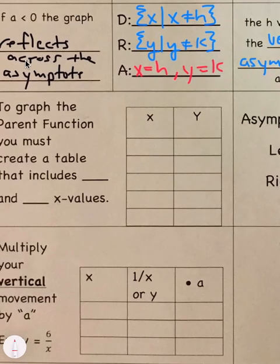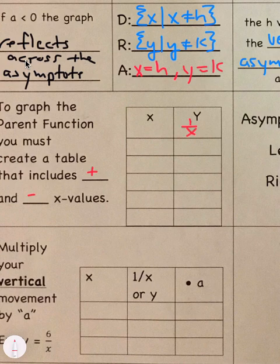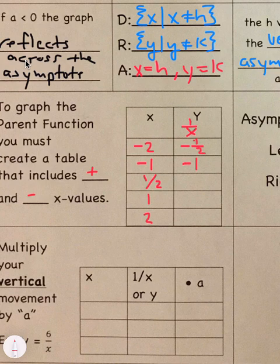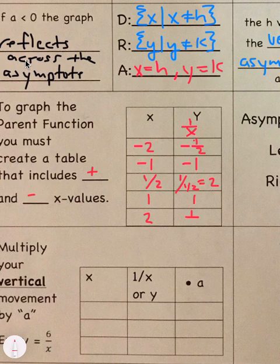To graph the parent function, you must create a table that includes positive and negative x values. So when we have y is equal to 1 over x, we want to do something like negative 2, negative 1, 1 half, 1 and 2. And so when we do that, we get negative 1 over 2, negative 1, and you have 1 over 1 half, and that is equal to 2. Because when you divide by a fraction, you flip it and multiply it. 1 over 1 and then 1 over 2.